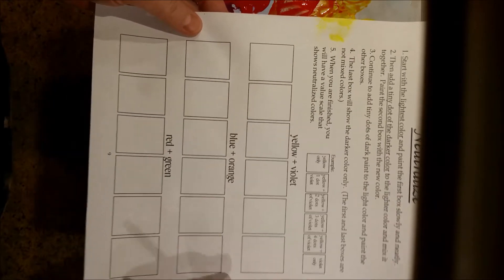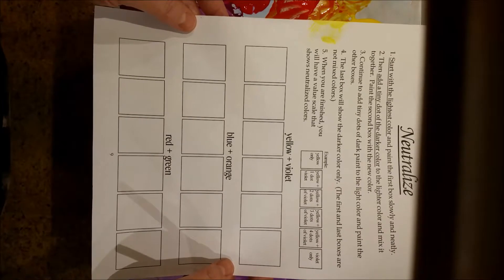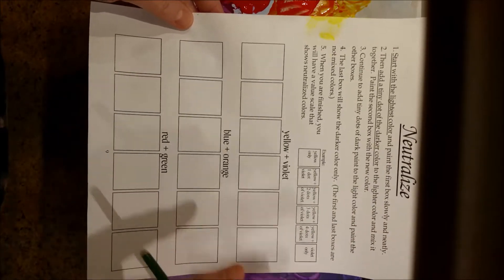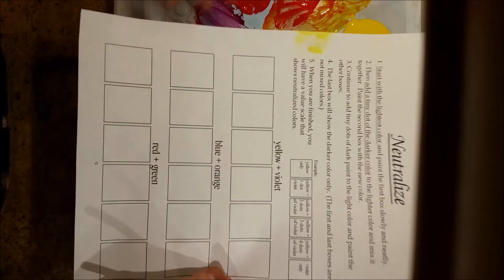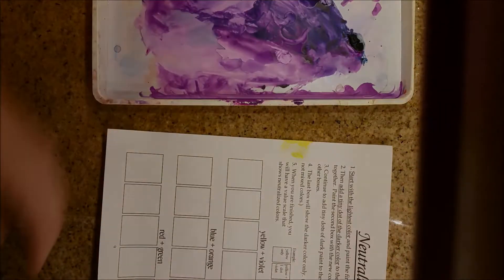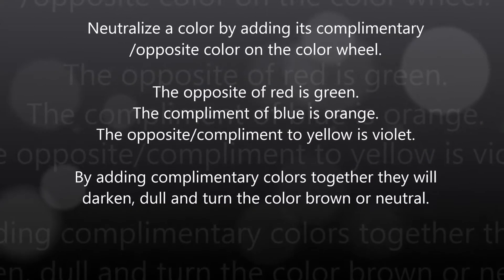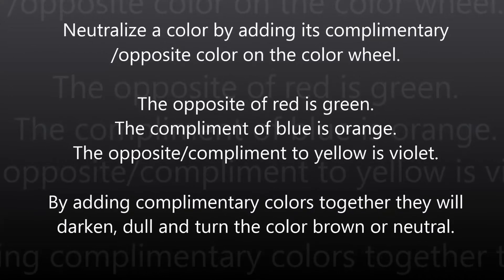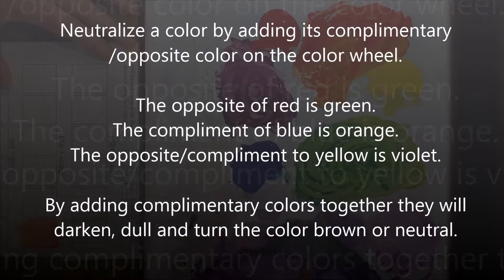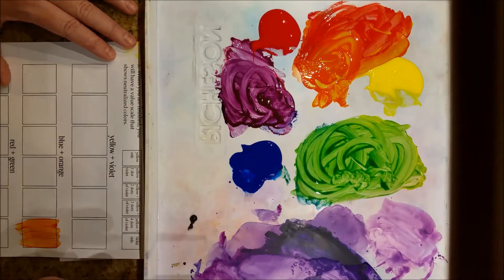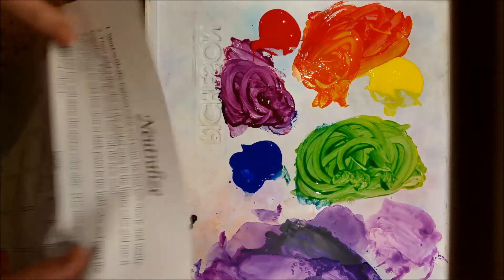And as you remember, neutralizing a color is when you're mixing complementaries or opposites in order to dull the color and eventually make it turn brown or neutral. So I went ahead and mixed up some more of my secondary colors so that I would have enough to work on my worksheet for neutralizing colors.